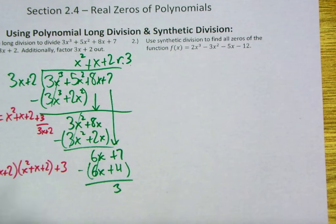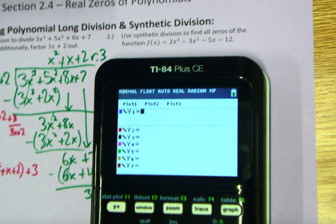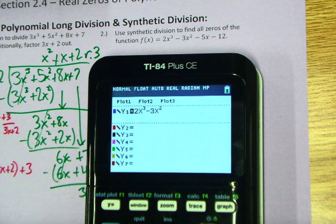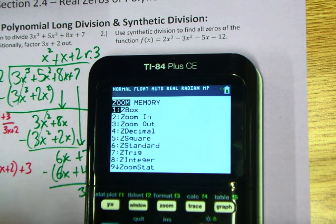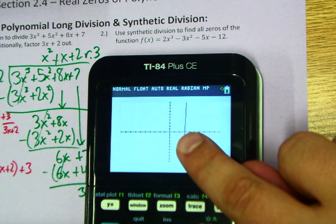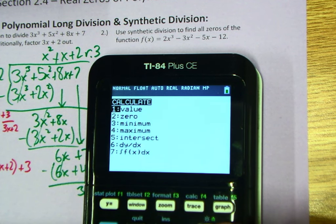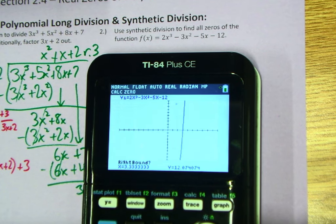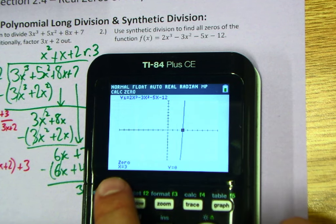Now let's remind ourselves of how synthetic division works. It says use synthetic division to find all zeros of the function 2x cubed minus 3x squared minus 5x minus 12. Because they don't tell us where to begin, the first thing I'm going to do is plug this into my calculator to come up with a reasonable estimate for what might be the root. Looking at the standard viewing window, it appears that we're hitting at x equals 3, and we can verify that with second trace, looking for our zero.